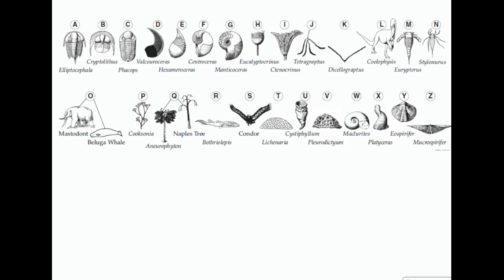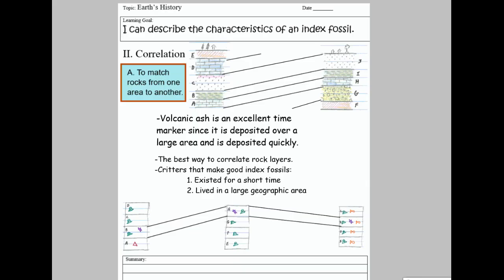Here in New York State, we have a number of index fossils, which can be found on the bottom of pages eight and nine in your reference tables. Here is a list of index fossils common in New York State. So to summarize: correlation means to match up rocks. We have two things that help us match up rocks — besides looking at rock type and sequence, we can use volcanic ash. But the best way to match up rocks is to use index fossils.